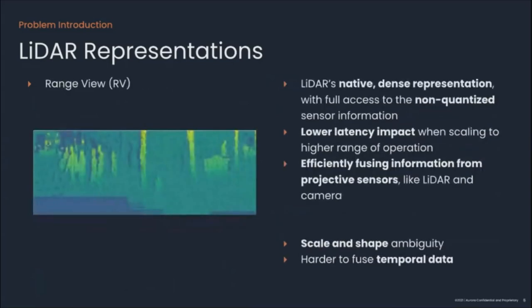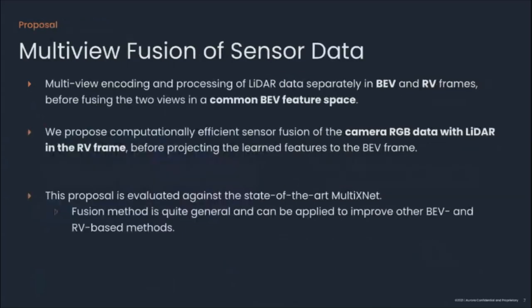Another alternative is Range View, or RV. The Range View method operates in LIDAR's native dense representation, which is very helpful for detecting small objects. However, using historical LIDAR data in RV is challenging due to distortions.